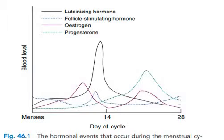If conception does not occur, then luteolysis begins and steroidal levels fall. This means the endometrium cannot be maintained, there is a loss of stromal liquid, leukocyte infiltration begins, and there is extravasation of blood. Finally, endometrial blood loss is reduced, leading to necrosis and sloughing — that is menstruation.